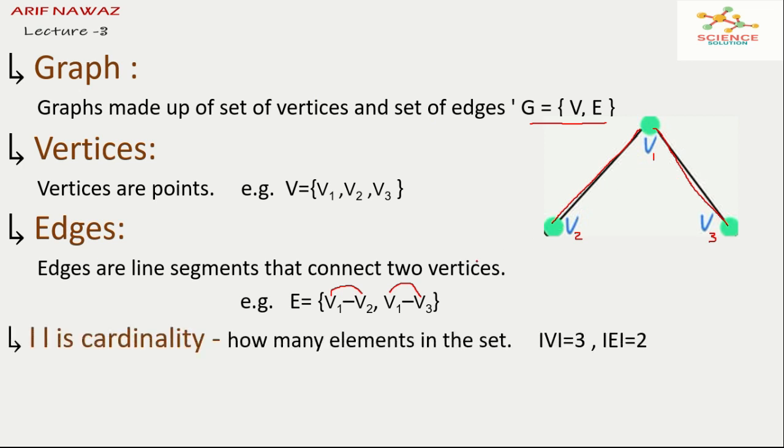Cardinality. Mod sign is called cardinality. This gives how many elements in the set. Here mod of V we mean how many vertices in the graph. So there are only three vertices in this graph. Then we write mod of V is equal to three. And mod of E gives how many edges in this graph. We can write mod of E is equal to two because there are only two edges in this graph.